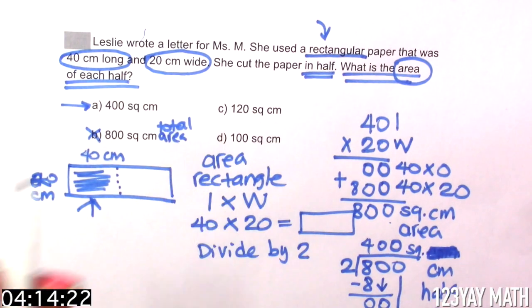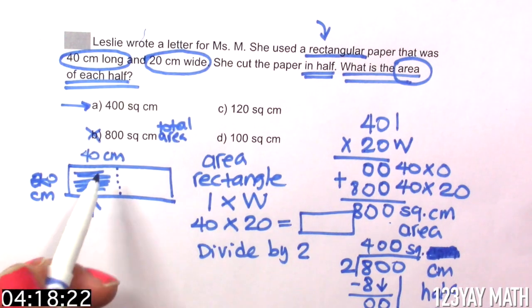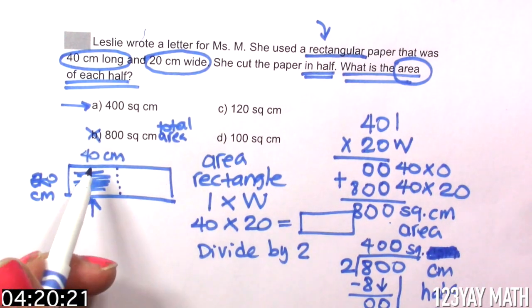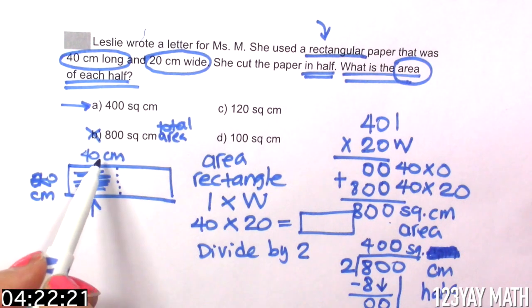What about C? 120. Well, I don't see that number. But looking at this, most likely they did 40 plus 20. That's 60 plus 40.